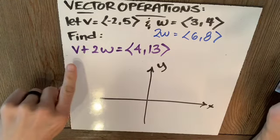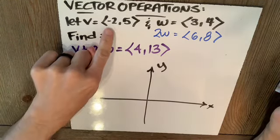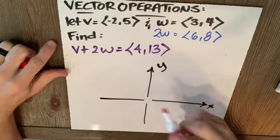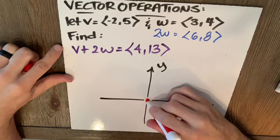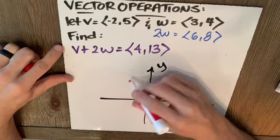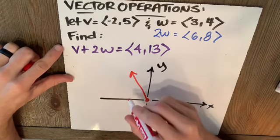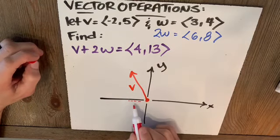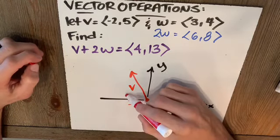If I have vector V, which is negative 2, 5, I'm going to put that in standard position. I put its starting point or its initial point here, and I'm going to go left 2, up 5. There is my vector V. Notice what I did. I went left 2 and up 5.